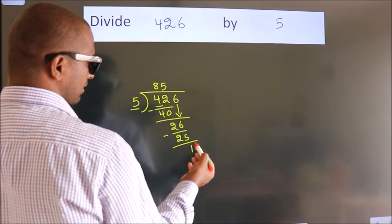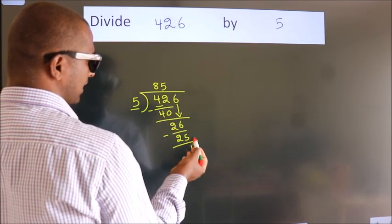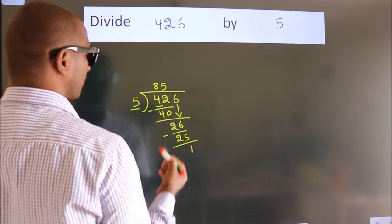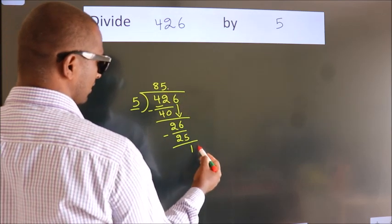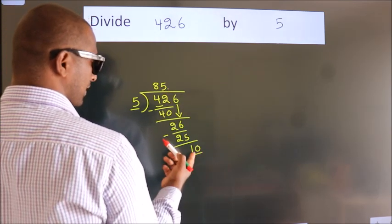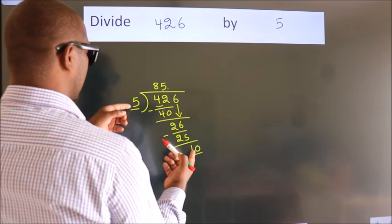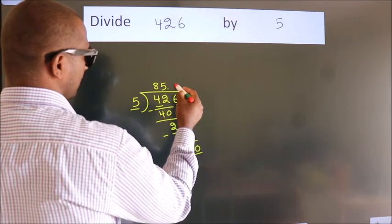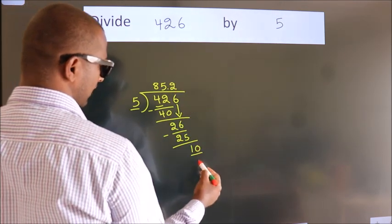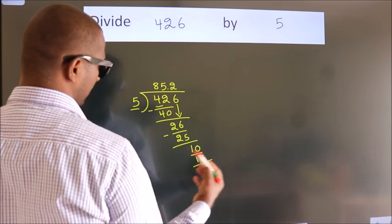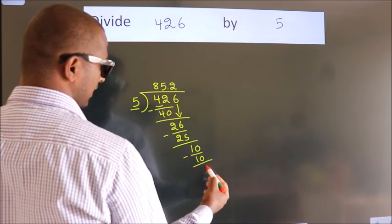After this, no more numbers to bring down. So what we do is put a dot and take 0. So, 10. When do we get 10 in the 5 table? 5×2=10. Now we subtract and get 0.